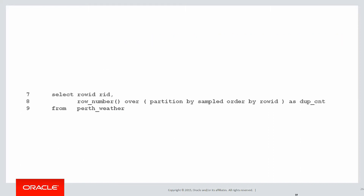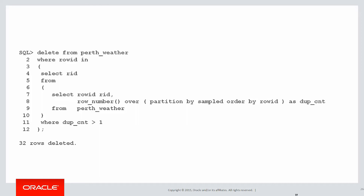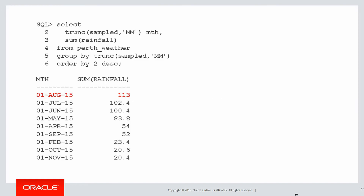So if we remove all the rows that have a duplicate count greater than one, we will have removed all the duplicates. Here's the query: we get the row number, partition by sample date, ordered by row ID. We select the row IDs where the duplicate count is greater than one. We have to use an inline view because we can't use an analytic function as a predicate. That identifies all the duplicate rows, and then we simply wrap that in a DELETE command — and we can see we removed 32 rows.